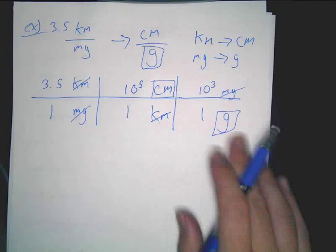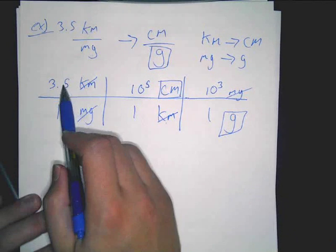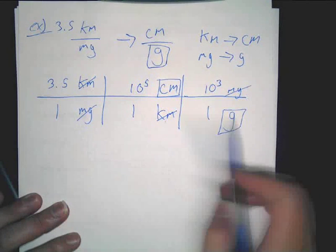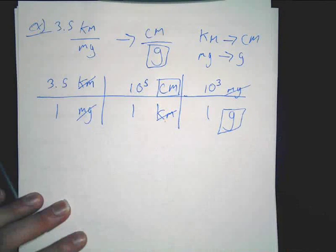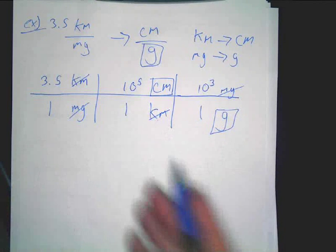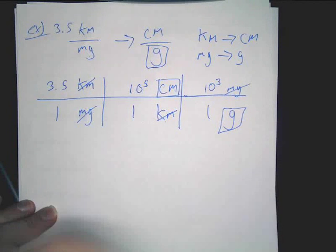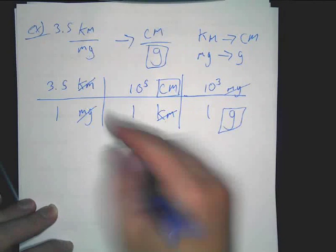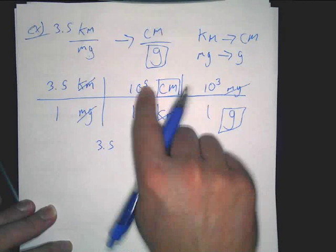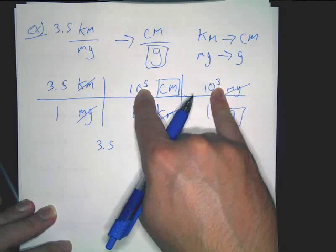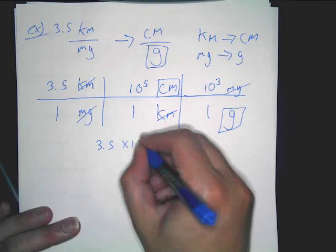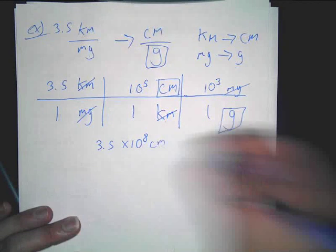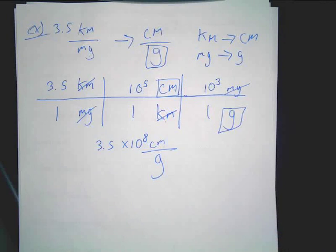Now the rest of this is just doing math. You're going to multiply everything on top and you're going to divide by everything on the bottom. So multiply on top, divide by the bottom. In this case it's one so doesn't matter, but if there were numbers you would divide. So if you remember when you multiply exponents like this, you actually add them together, or you can type it into your calculator, totally fine too. So 3.5 times 10 to the eighth centimeters over grams. You got to include that whole thing.